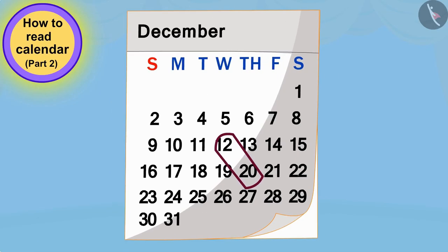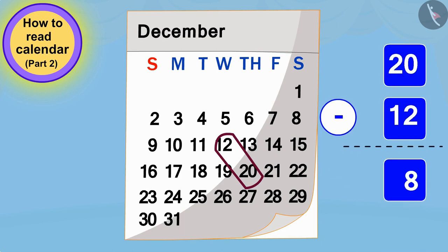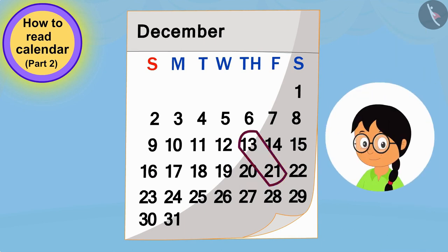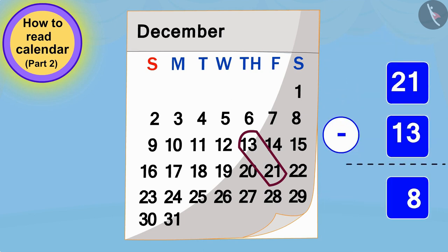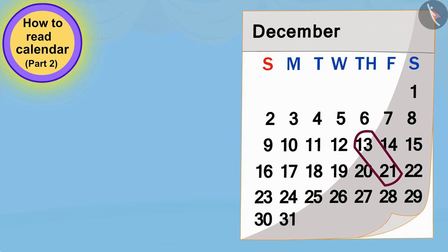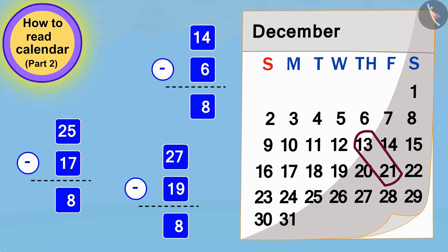Children, can you tell what the difference between 20 and 12 will be? Exactly — 8! Now Minu saw the next pair of numbers. Children, what will be the difference between 21 and 13? Yes, this difference will also be 8. Children, you will find that the difference between such diagonal pair of numbers in the calendar will always be 8.